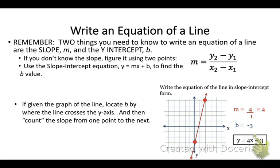Now let's move to a different topic with linear equations, how to write an equation of a line. Remember the two things you need to know to write an equation of a line are the slope, which we denote with m, and the y-intercept, which we denote with the letter b. If you don't know the slope you can figure it using two points. Designate which point is point one and which one is point two. The formula is take y2 and subtract the other y value divided by the difference in the x's.